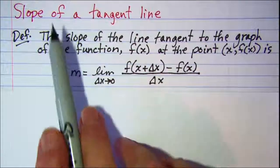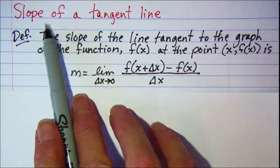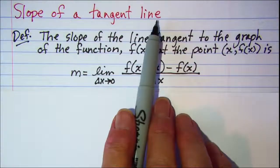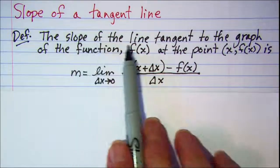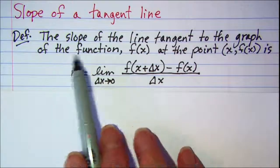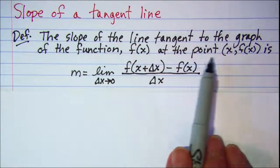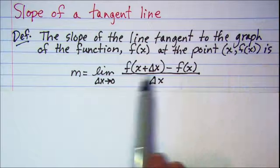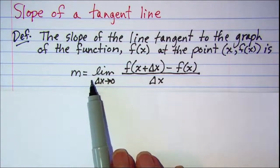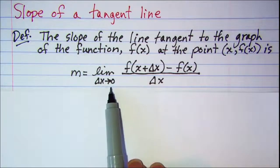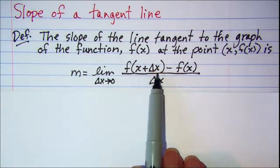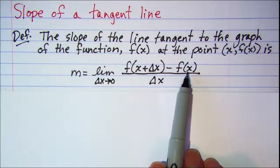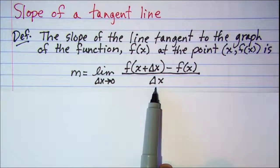In this video we'll be doing another example of finding the slope of a tangent line. The definition that we'll be using is the slope of the line tangent to the graph of the function f(x) at the point (x, f(x)) is m equals the limit as Δx approaches zero of f(x + Δx) minus f(x) all divided by Δx.